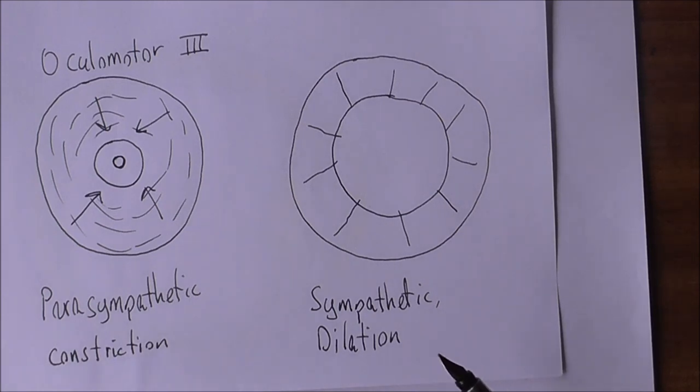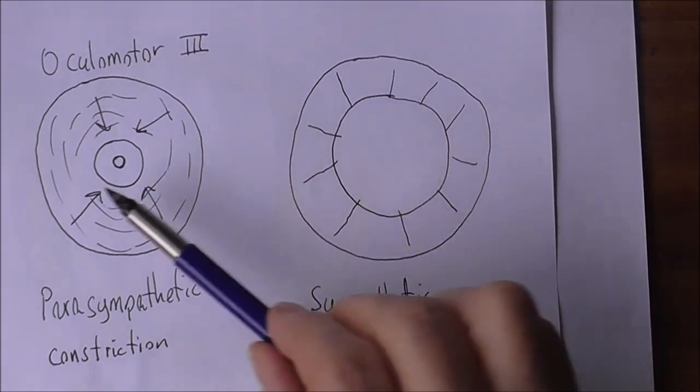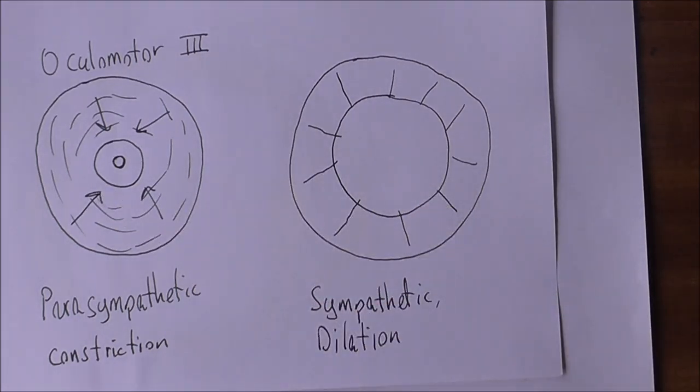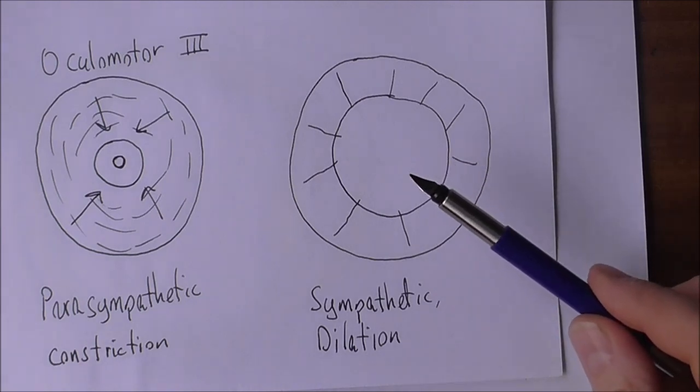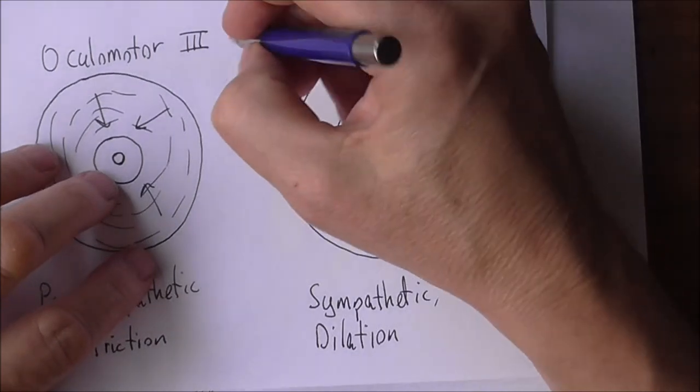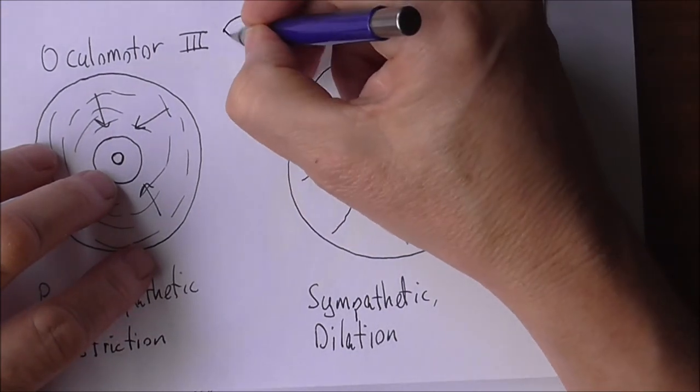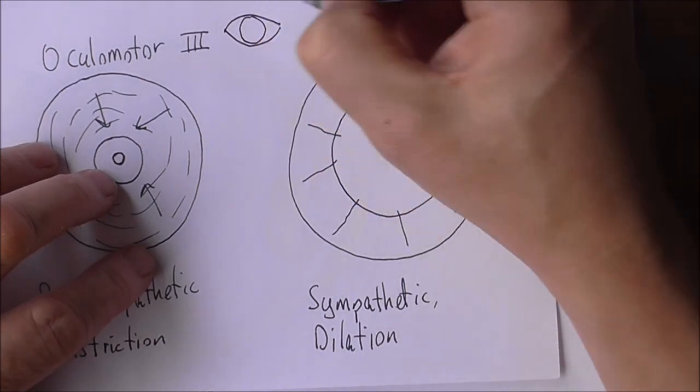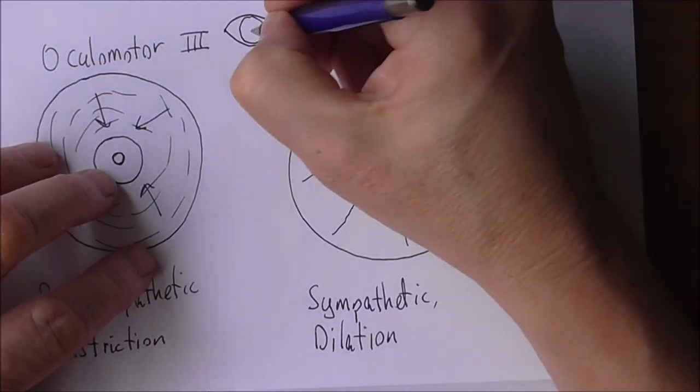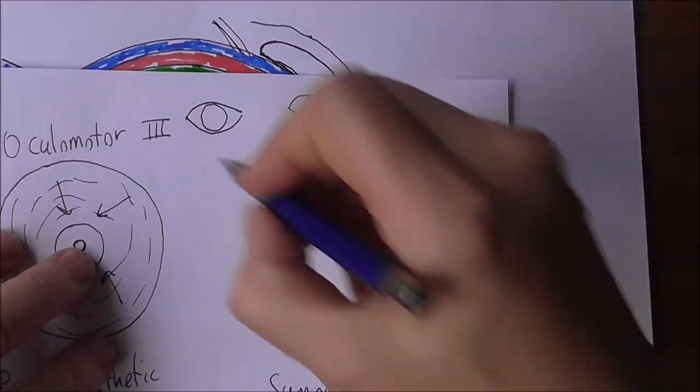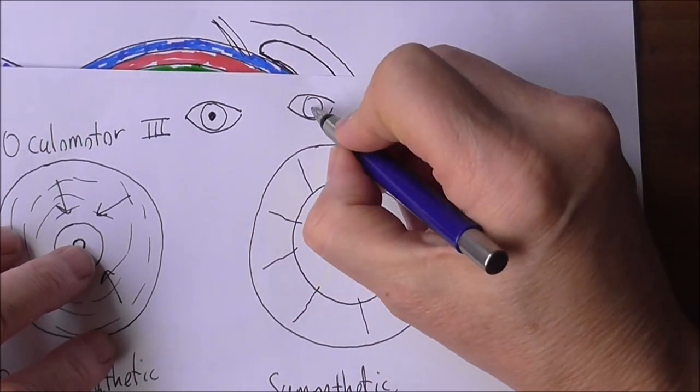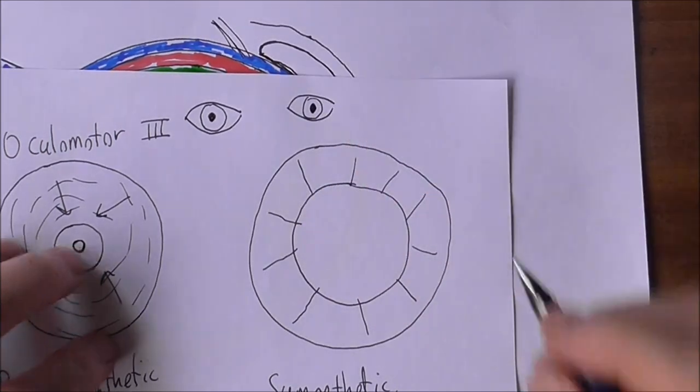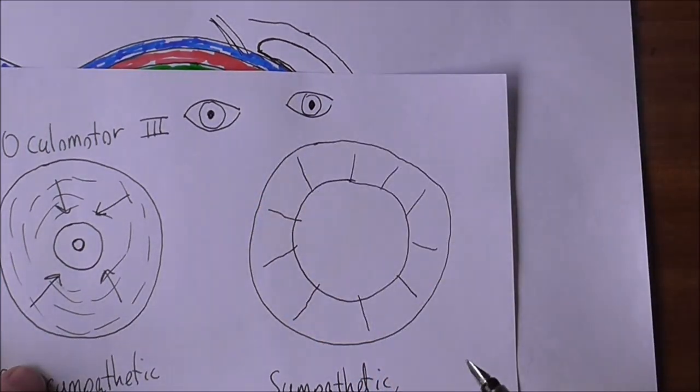Now, one of the key things about our observations of pupils is to note whether they are equal or not. So normally, if we shine a light in one eye, if we think about both eyes here, we have an eye there and an eye there. And if we shine a light in one eye, then we would expect both pupils to constrict. And if one pupil dilates, we would expect them both to dilate. It would always happen together.